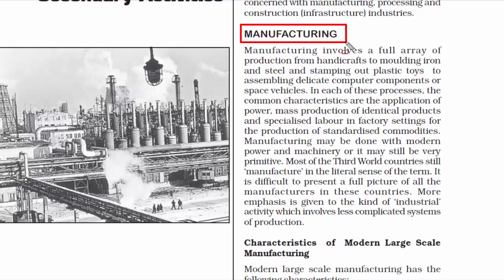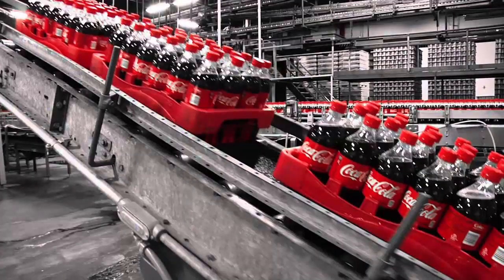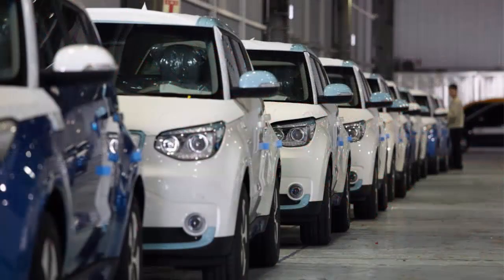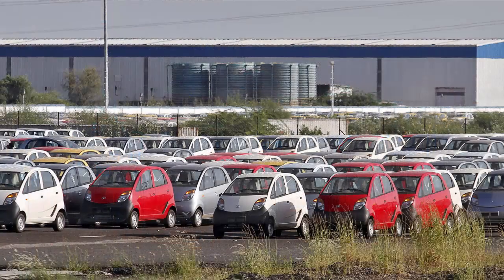The first topic we will read under this chapter is manufacturing. The meaning of manufacturing is simply production — anything that you make falls under the manufacturing category. Another important aspect is the ability to produce more, meaning mass production. If you're able to make hundreds and thousands of units of one particular thing, then you have a large production unit, which we call a manufacturing industry.